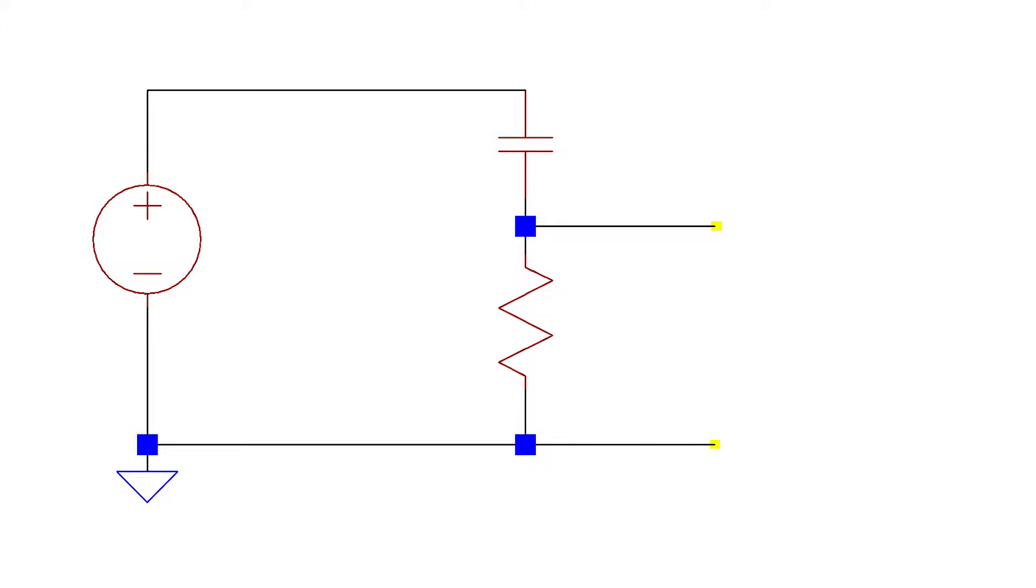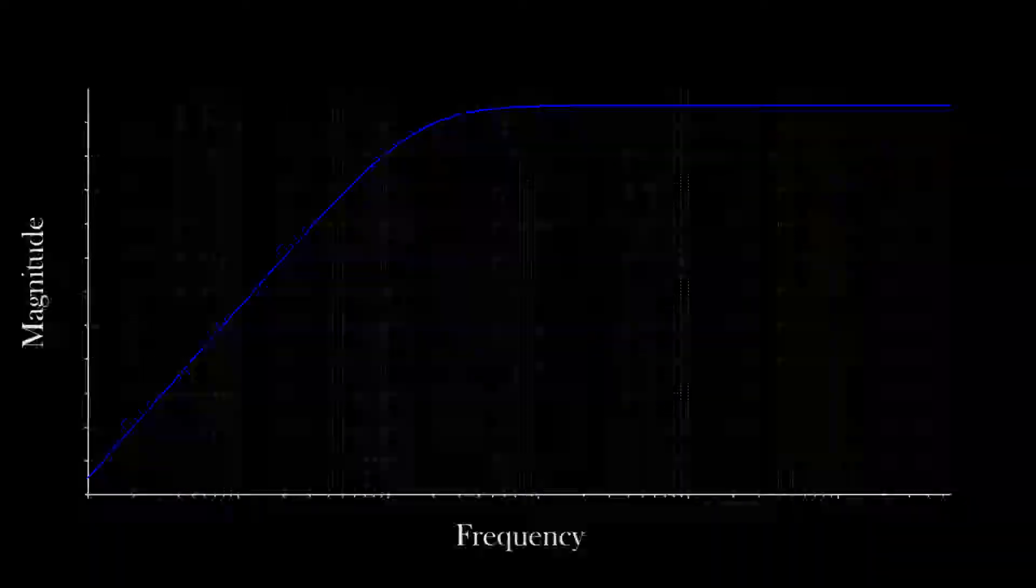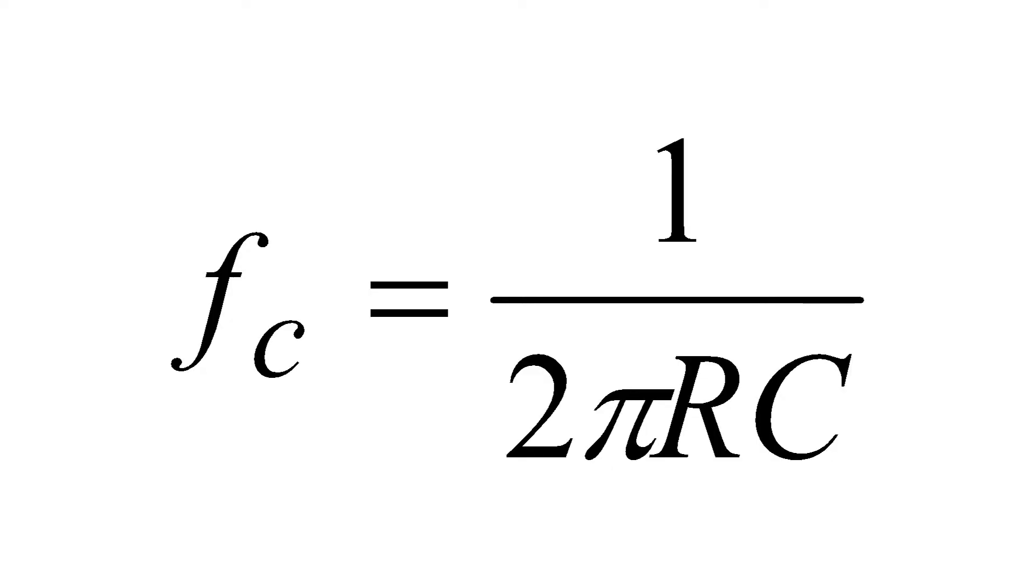The body plot for a high pass filter looks exactly the same as the low ones for the low pass filter, except for that it's flipped around. The high frequencies higher than the cutoff frequency look pretty much horizontal on the plot. As the signal approaches the cutoff frequency, it starts to decrease its amplitude. And below the cutoff frequency, the amplitude of the signal is going down significantly lower. The equation for the cutoff frequency of a high pass filter is the same as the low pass. That is, the frequency is inversely proportional to the resistance of the resistor times the capacitance times 2 pi.